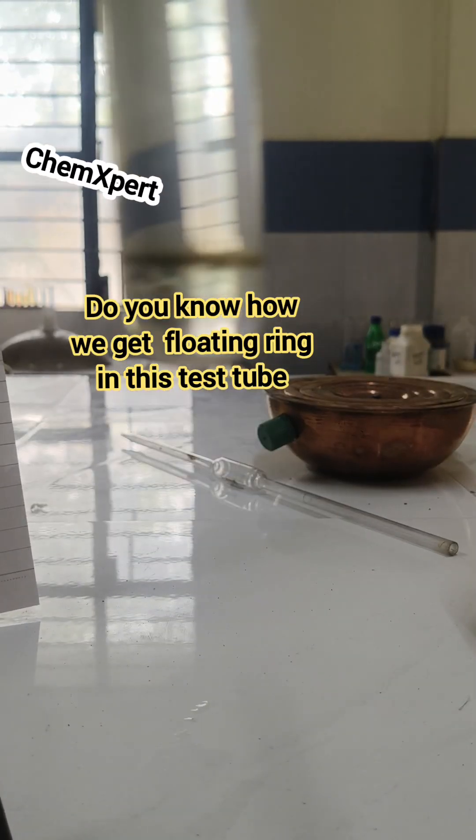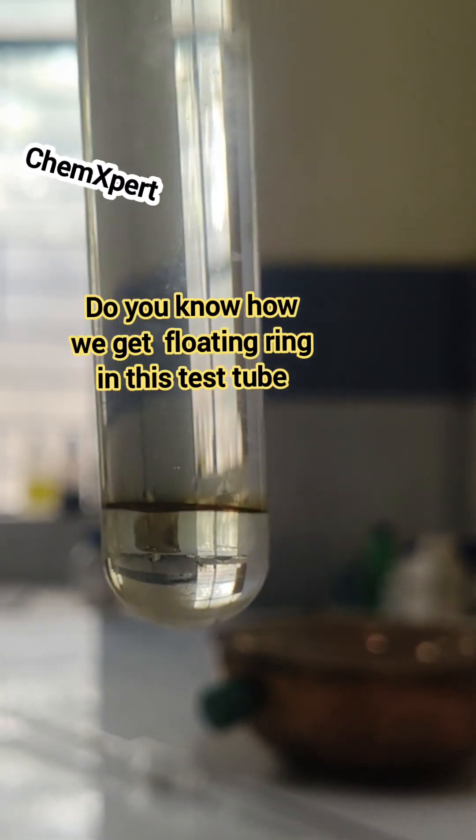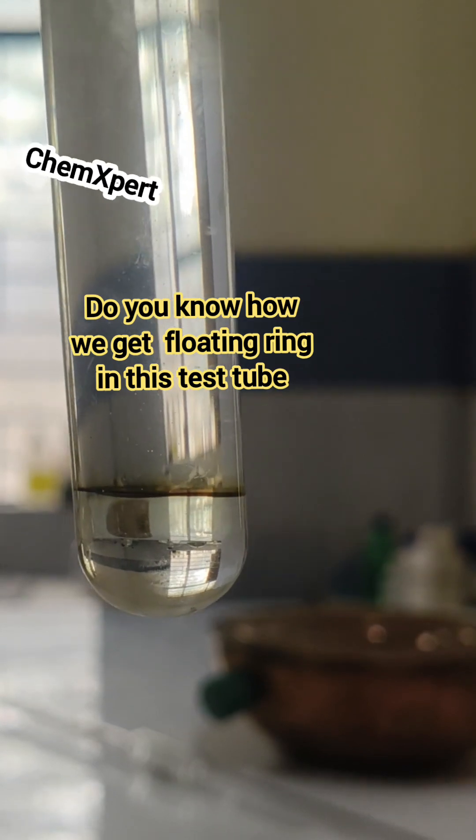Do you know how we get a floating ring in this test tube? You can observe here a black color ring which floats in this.